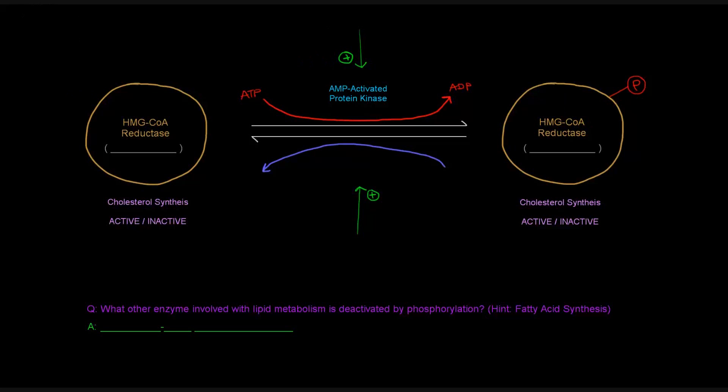If we wanted to remove that phosphate, we could hydrolyze it off and get rid of it. That would be catalyzed by a phosphatase, specifically HMG-CoA reductase phosphatase. The phosphatase removes the phosphate on HMG-CoA reductase.